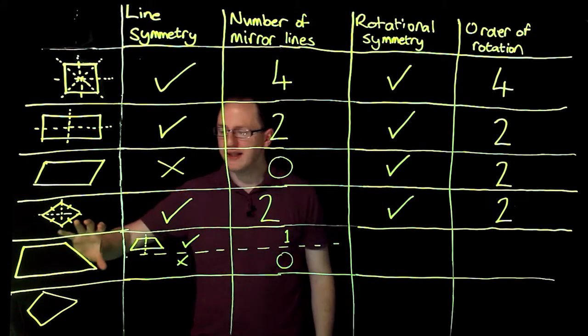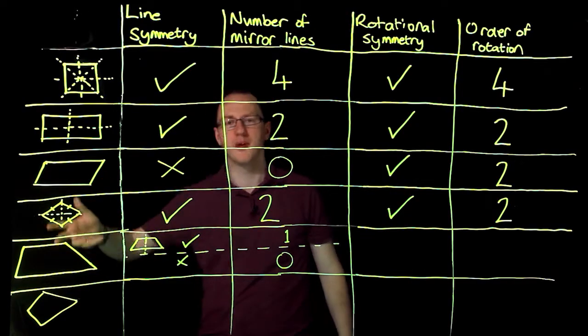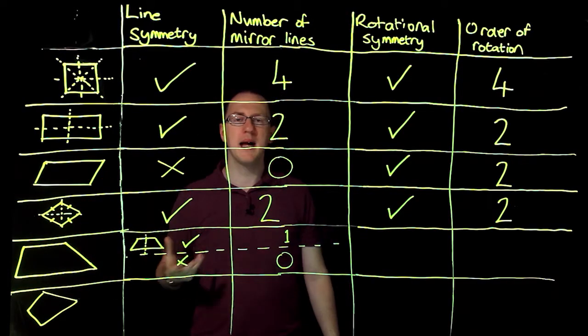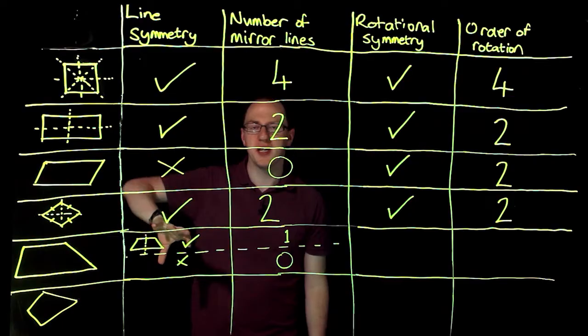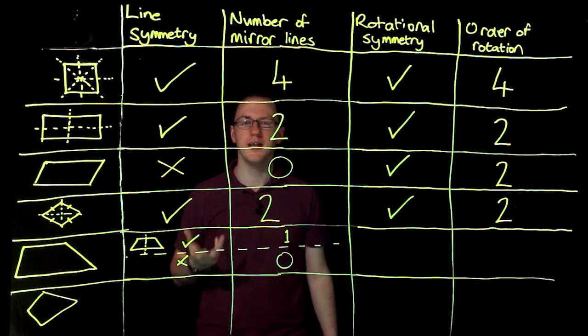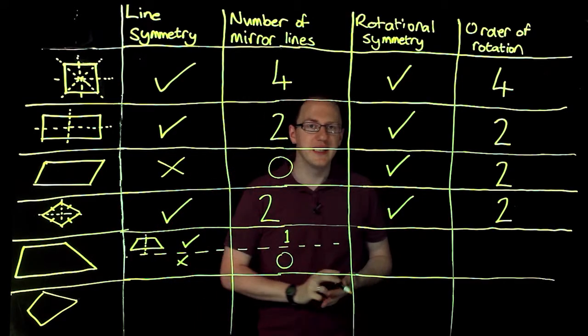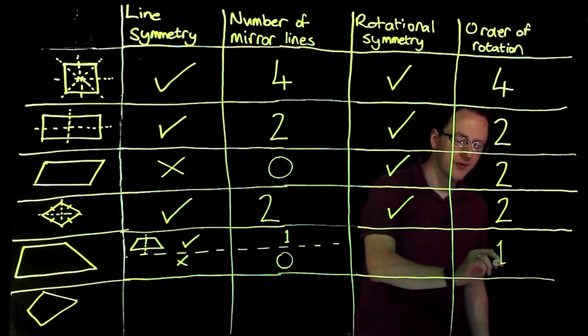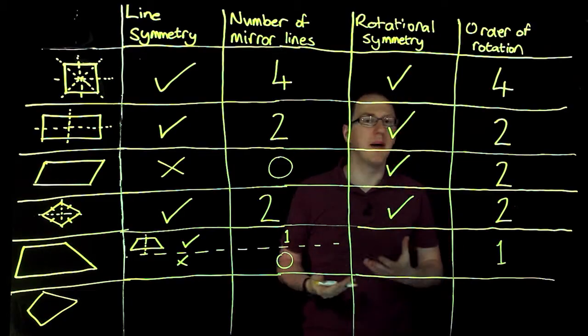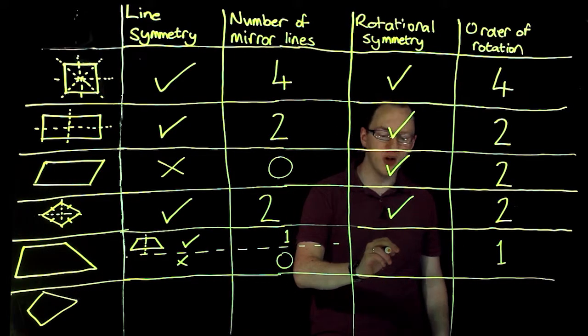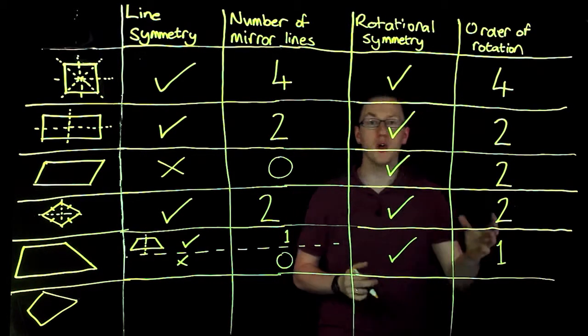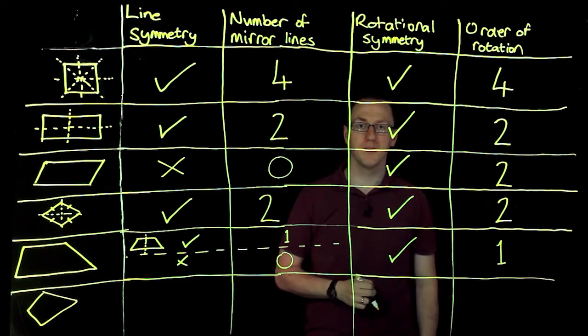Now, trapezium, if I try to pick it up and turn it around, the only time it will fit back into itself is when it's back to the start. So it's going to be rotated 360 degrees. So it has order rotation symmetry one. Okay, and not every shape has at least one. So we're going to say it does have order rotation symmetry, but it's only of order one.